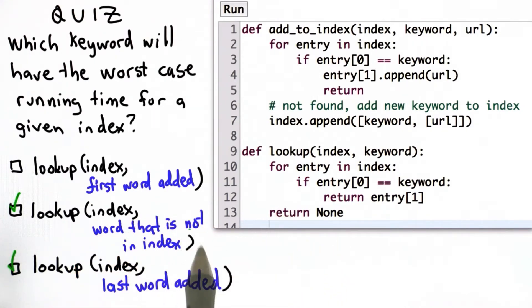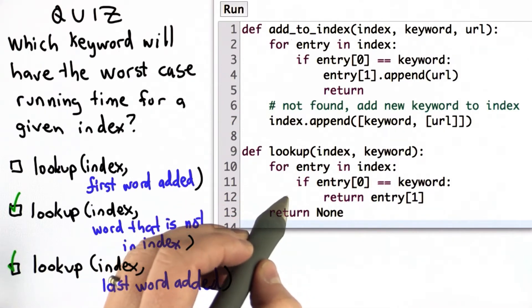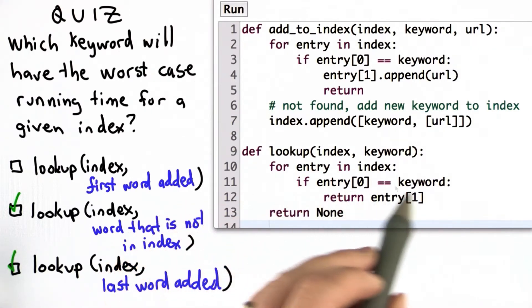In the case where it's a word that's not in the index, the test will always be false and we'll get to the end of the loop and return none. In the case where the last word is added, we'll still go through the loop the number of elements times, but the very last time we'll find a match and return that element.